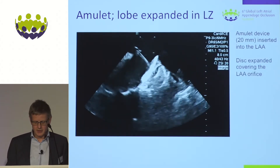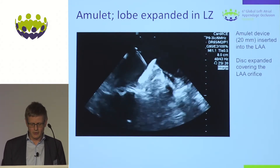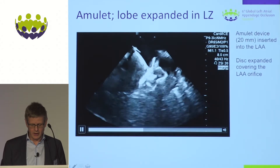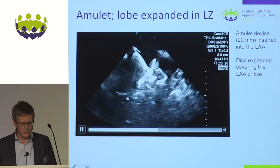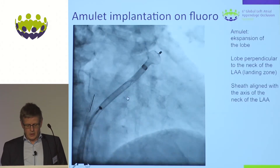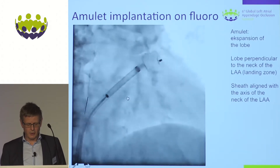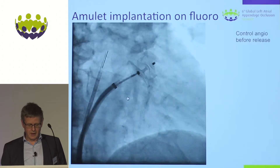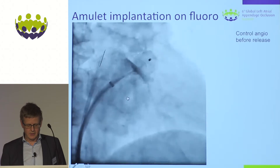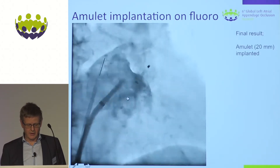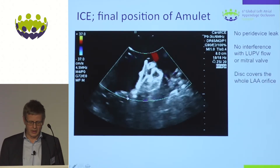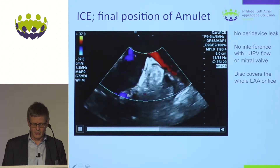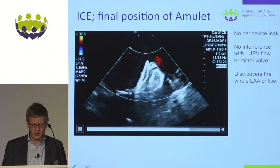The disc of the device is then exposed. In this projection it covers the whole orifice, extending all the way up to the upper pulmonary vein ridge and maintaining good contact with the left atrial wall, with no interference with the mitral valve. Fluoroscopy confirms lobe and disc expansion, and a control angiogram is performed before release. The final result on ICE shows the lobe distal to the circumflex, the disc covering the whole orifice, no interference with the left upper pulmonary vein flow, and no interference with the mitral valve.